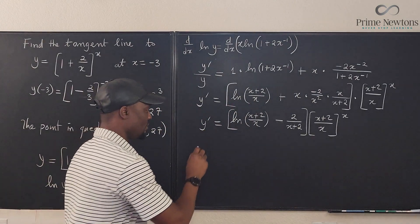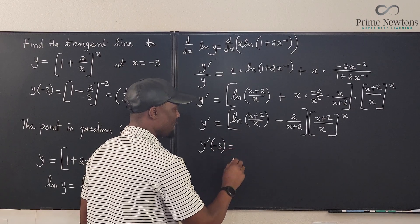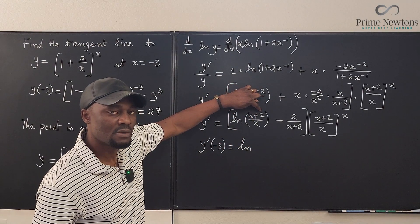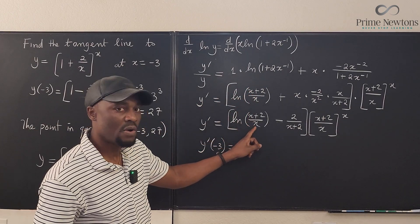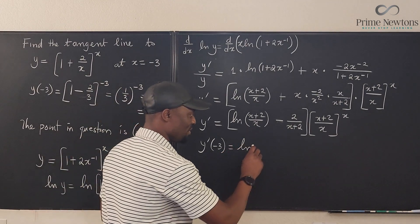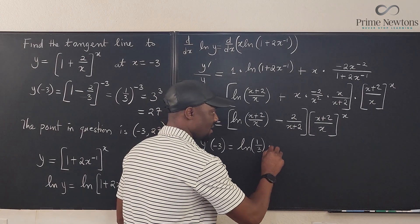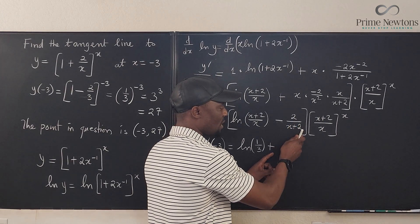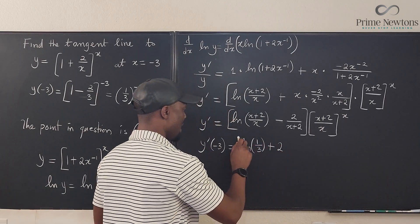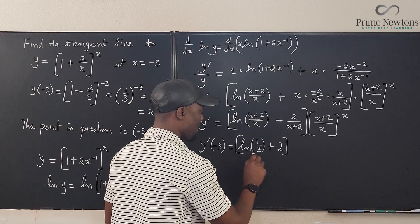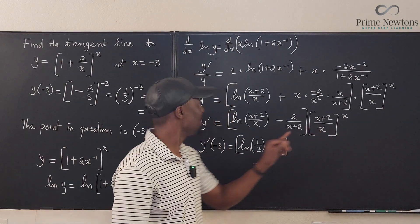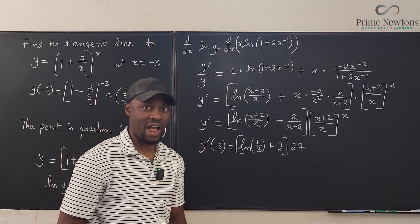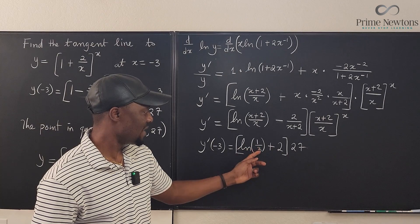So y prime evaluated at negative 3: the natural log of negative 3 plus 2 over negative 3 gives the natural log of 1 third. Then minus 2 over negative 3 plus 2 becomes plus 2. We already evaluated x plus 2 over x raised to power x at negative 3 at the beginning — that gives 27. So the slope is 27 times the natural log of 1 third plus 2.